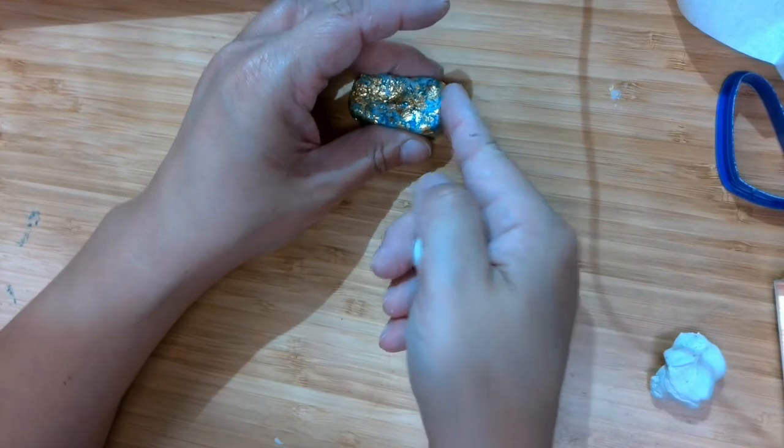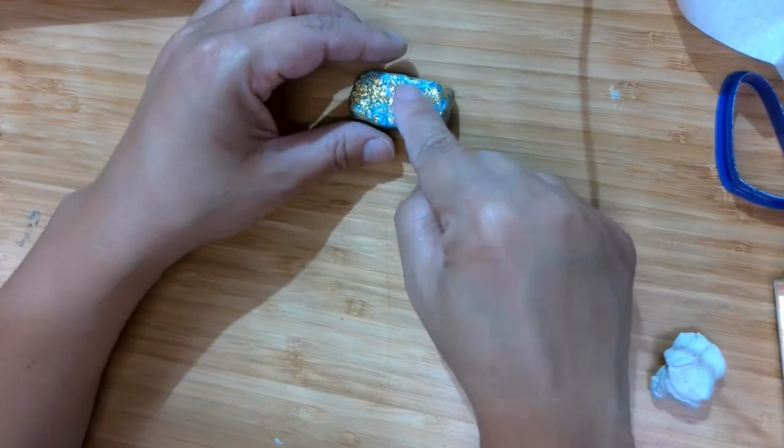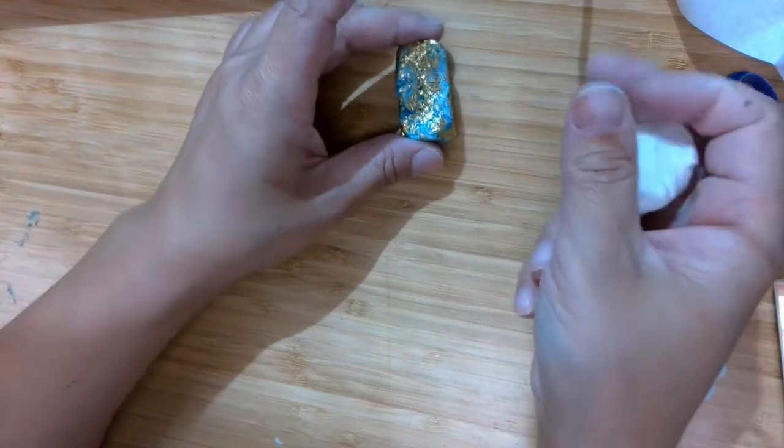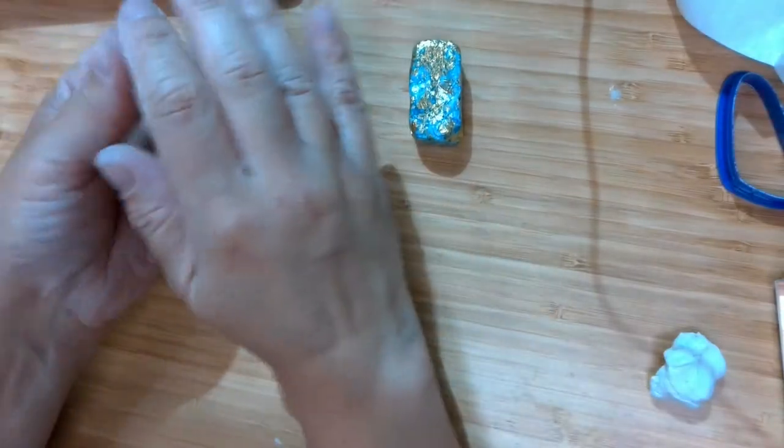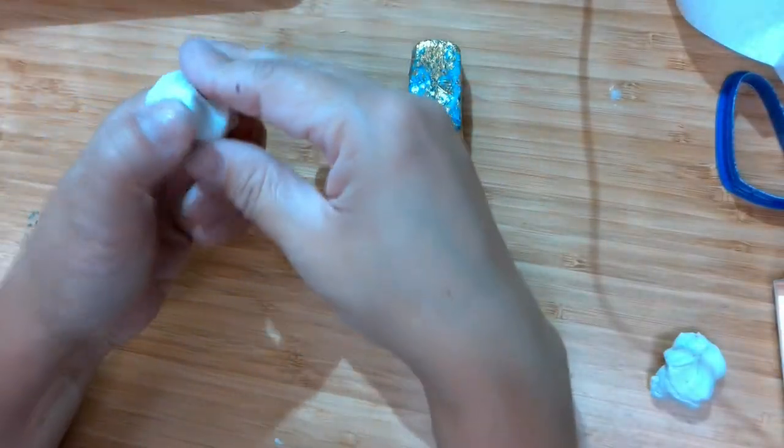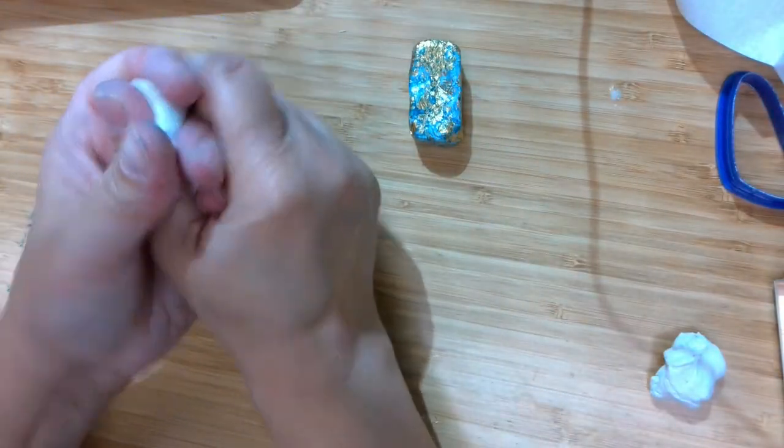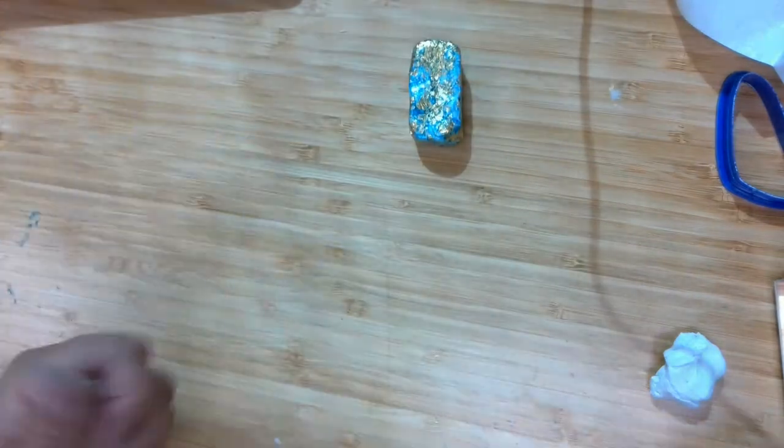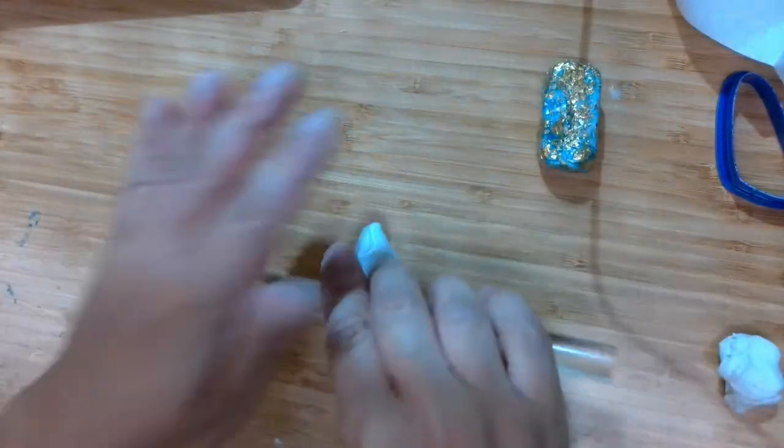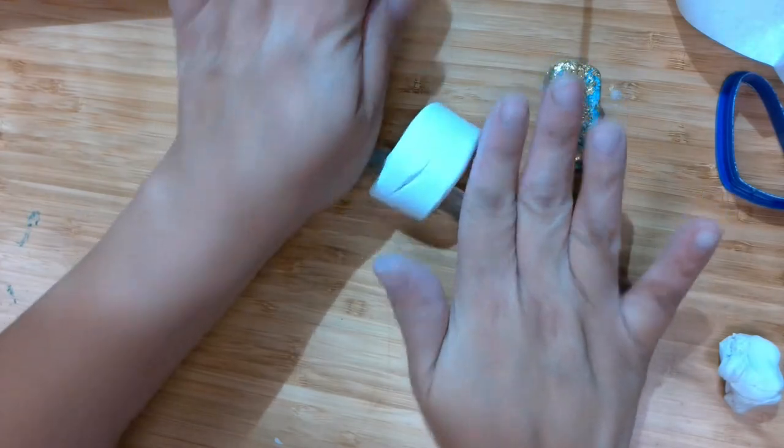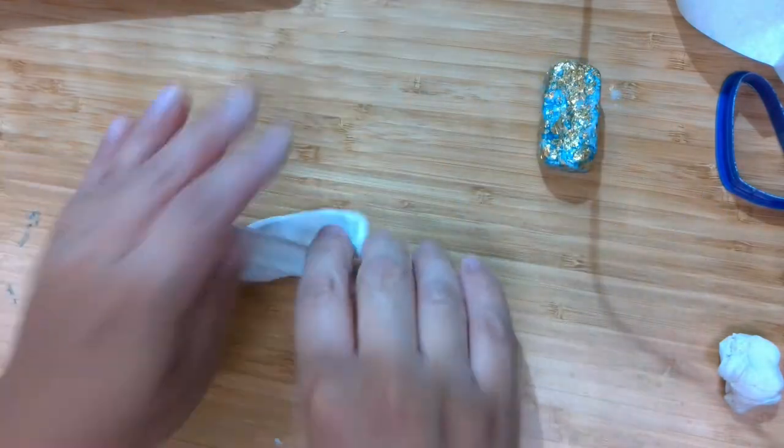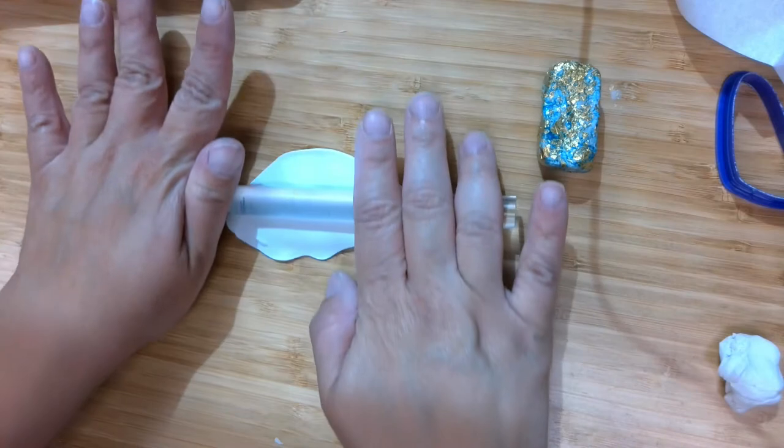Because even though we used the liquid clay to hold this together, it still can fall apart when we're doing our cutting and everything. So this white clay is just going to be the backing. So we're going to roll it out. And it doesn't need to be thick.